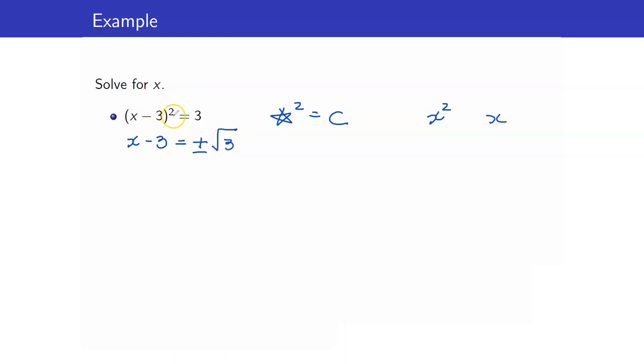To get rid of the exponent 2 here, get the square root of both sides and don't forget to include your plus or minus. So we have x is equal to transpose minus 3, it will become 3 plus or minus square root of 3.